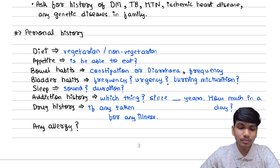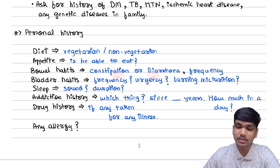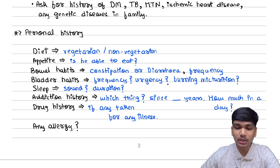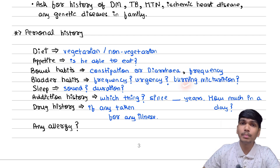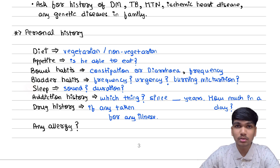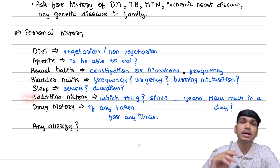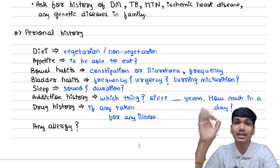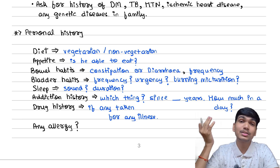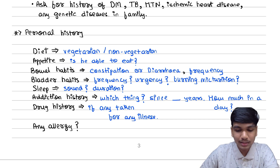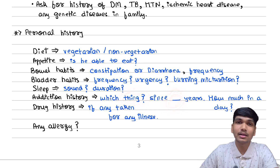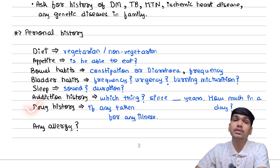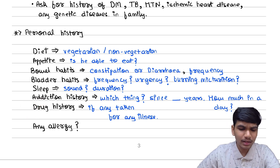At the end, you shall cover personal history: diet of the patient — vegetarian or non-vegetarian — appetite, bowel habits — whether suffering from constipation, frequency, and what is normal for the patient. Next, bladder habits: frequency, how often the patient urinates, whether there is urgency or burning micturition. Next, sound sleep and duration. Then addiction history — you have to ask this very strictly because sometimes patients do not reveal addiction history to medical students. Ask what they are addicted to, for how many years, the quantity consumed per day. At the end, drug history — which drugs they are taking — and any allergy.